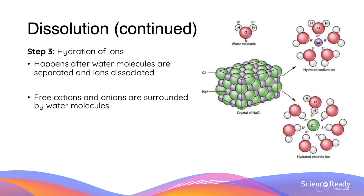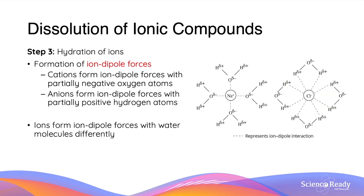The final step is hydration. This is where the water molecules and ions have already been dissociated, and the free cations and anions then become surrounded by water molecules. We then see the formation of ion-dipole forces, which occurs with the cations forming them with the partially negative oxygen atoms, and the anions forming them with the partially positive hydrogen atoms. Because we are forming bonds in this step, we can predict that this step is going to be exothermic.